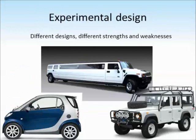Now let's look at experimental design. It might help to think about experimental design as being like different types of car — they're all cars, but they're all constructed and designed very differently, with different strengths and weaknesses. In the same way, there are different techniques and methods we can use to put our experiments together, and each of those has strengths and weaknesses that go with it.